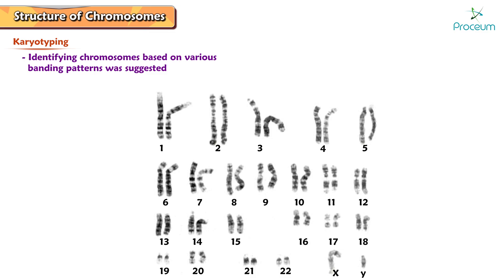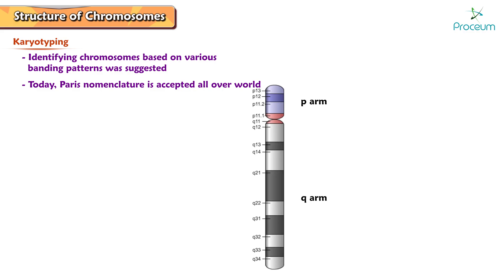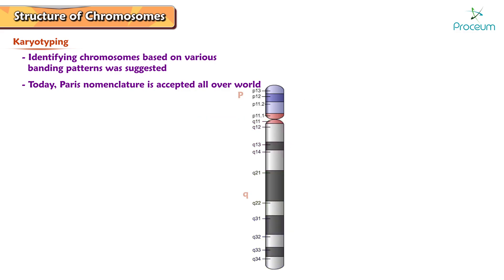Identifying chromosomes based on various banding patterns is done using the Paris nomenclature, which is accepted worldwide. Both p and q arms consist of regions numbered 1, 2, and 3 starting from the centromere, further subdivided into bands for precise location. For example, the retinoblastoma locus is situated on chromosome 13, at position 13q14 — the fourth band on the first region of the long arm of chromosome 13.